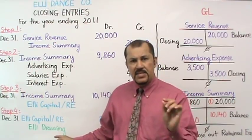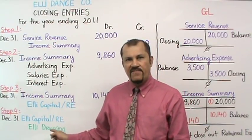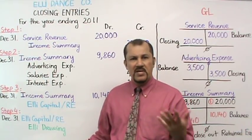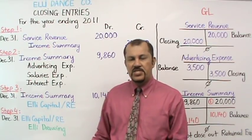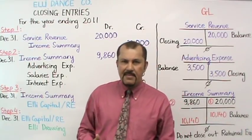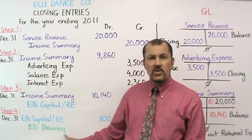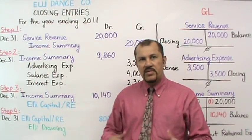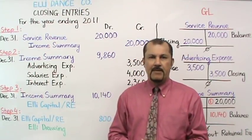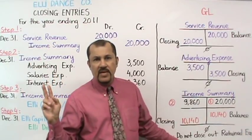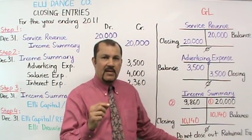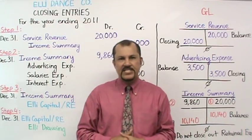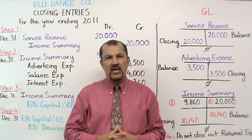Step four is your drawing account, and again, this is only if you have a proprietorship. Drawing is when the owner takes out money from the company for personal purposes. It's a contra equity account that has a normal debit balance. To close it out, we are going to credit drawing, and the offset will be to the capital account, reducing your capital. So in essence, drawing reduces your capital. A little note here: entry number three is when you're using your retained earnings or capital — you're not closing out that account, you are merely increasing your capital or retained earnings account through entry number three. So this is an overview of the closing out process.